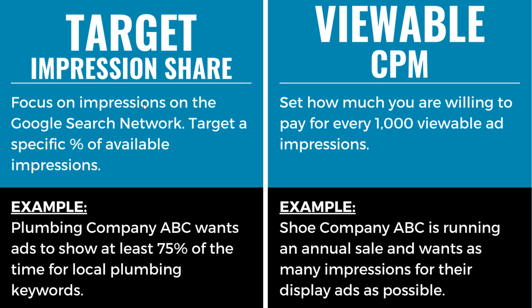For Target Impression Share, you're focusing on impressions on the Google Search Network, targeting a specific percentage of available impressions. Plumbing company ABC wants ads to show at least 75% of the time for local plumbing keywords — every time someone searches 'emergency plumber in Chicago,' they want at least a 75% impression share. You're not focused on clicks or conversions; you're focused on making sure your ad is showing up for those keywords. For Viewable CPM, shoe company ABC is running an annual sale and wants as many impressions for their display ads as possible — you set how much you're willing to pay for every 1,000 viewable ad impressions.